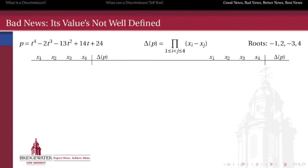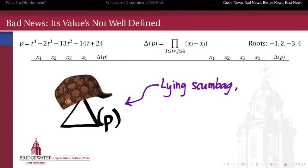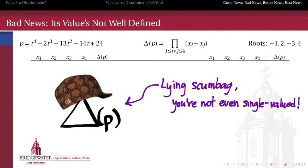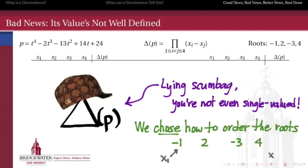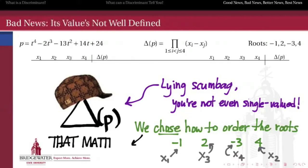So let's get going. First comes the bad news. The discriminant of a polynomial is not a well-defined quantity. It looked like such a great thing, but then it turns out that it's not even single-valued. In other words, you and I might compute the discriminant for a polynomial and get different answers for the same polynomial. Well, if you were watching the first part of these videos carefully, you'll notice that I made a choice when I computed those discriminants — I chose which of the roots was x1, which one was x2, which one was x3, and so forth.